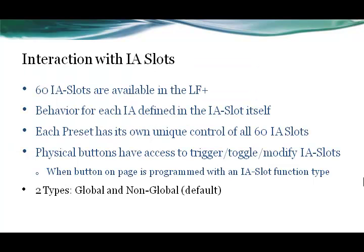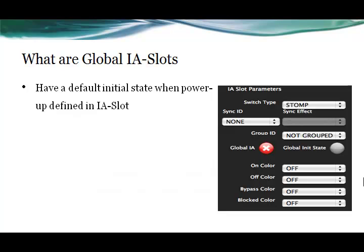There are two types of IA slots: global IA slots and non-global IA slots, which is the default. When you power on the system, the Liquid Foot will look at the parameters of all the IA slots. If the parameter is set as global, that particular IA slot will look at the global initial value, and that will be the starting point for a global IA.